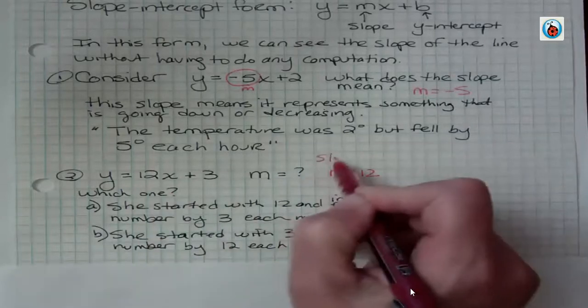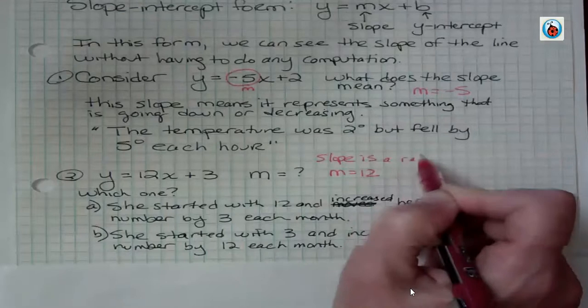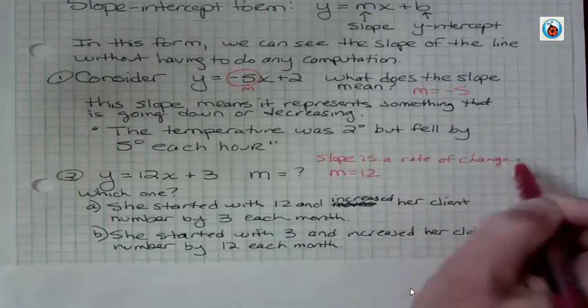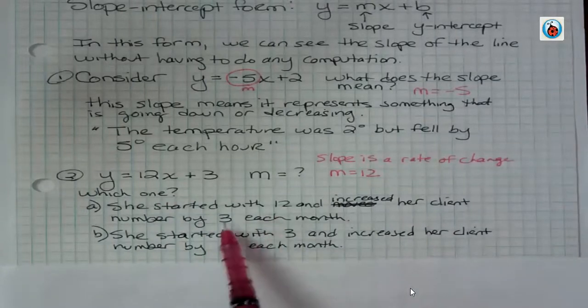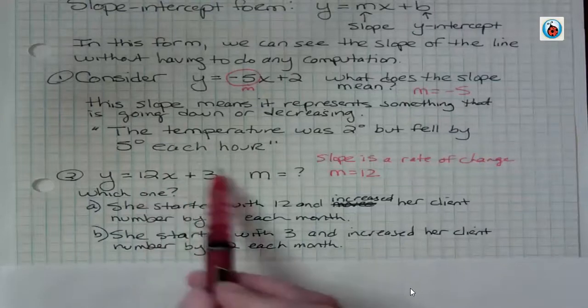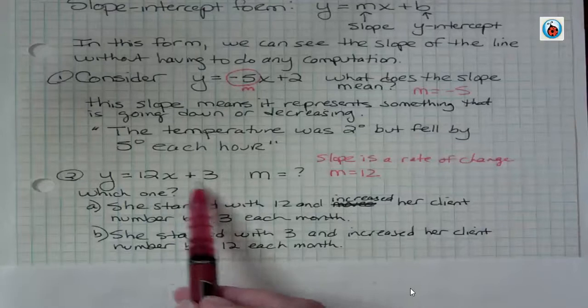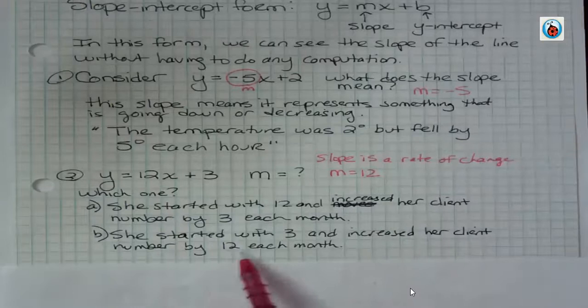And that might be important to write down. Slope is a rate of change. That's what's happening every month. Well, she's not changing by 3 each month. She's changing by 12 each month. 3 would be her starting point. This number at the end, the y-intercept, that's a starting point. So she started with 3 and then increased her client number by 12 each month.